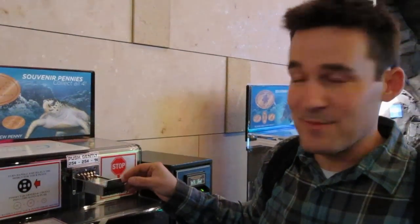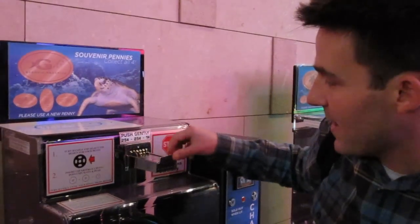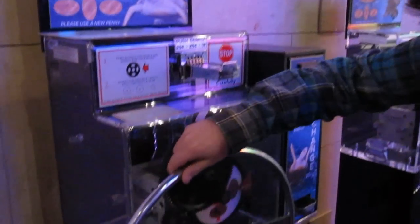You may be familiar with a machine like this. I insert a penny and turn the wheel. Out pops a strange little shape. This is called an ellipse.